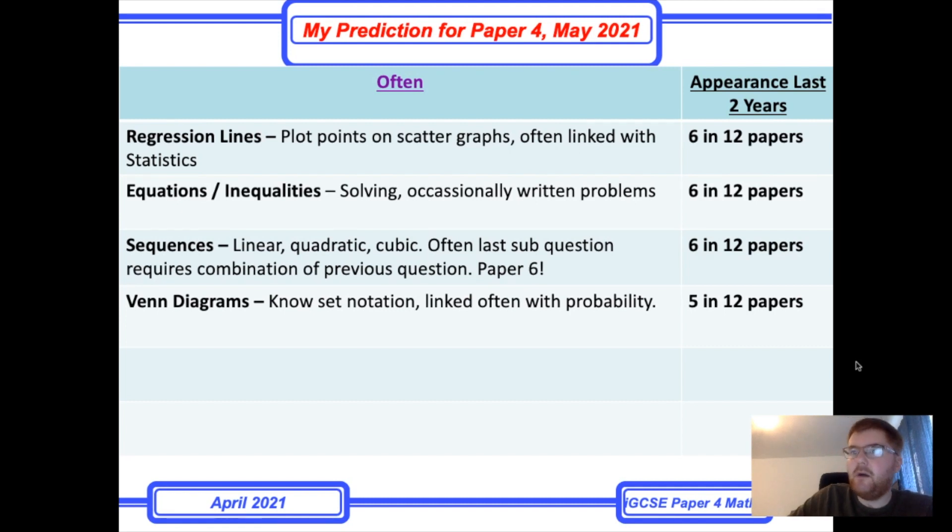If sequences does not come up on paper two or paper four, very likely your investigation is going to be a sequences investigation. It's a very common investigation they use. So again, use the papers that you've seen before. That will guide you for what's likely to come.